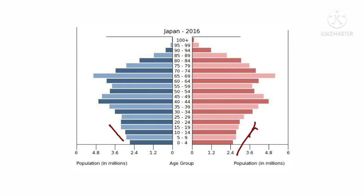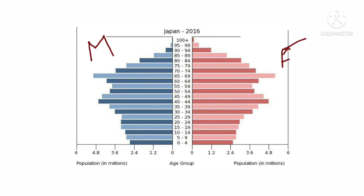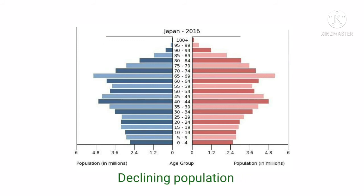Our next pyramid is the declining population pyramid of Japan 2016, where the base is narrow and gradually reduces in thickness toward the top. The population in the age group of 0 to 15 years is 18 percent, and only 17 percent of people are above 65 years of age. This pyramid is an example of developed countries.